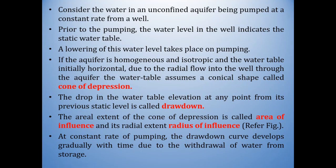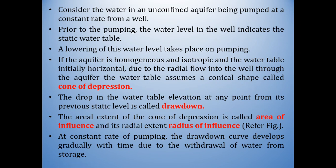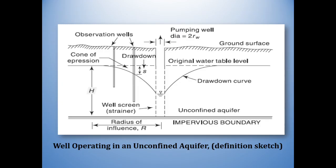The drop in the water table elevation at any point from its previous static level is called drawdown. The aerial extent of the cone of depression is called the area of influence and its radial extent is called the radius of influence. At a constant rate of pumping, the drawdown curve develops gradually with time due to the withdrawal of water from storage. This schematic diagram represents an unconfined aquifer from which water is pumped at a constant rate, resulting in the cone of depression, drawdown curve, and radius of influence.